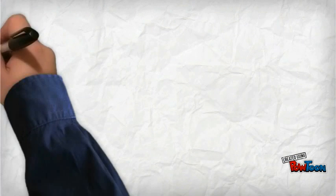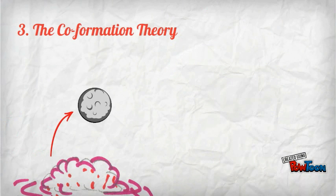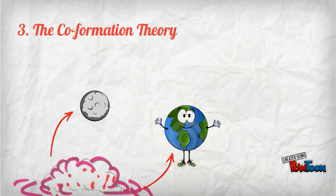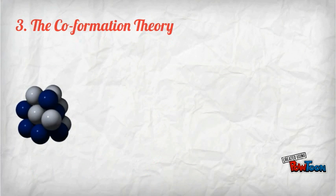The third theory is the Co-formation Theory. It explains the possibility that the moon formed alongside Earth 4.5 billion years ago, coalescing from gas and dust in the same part of our solar system's protoplanetary disk. While this hypothesis can account for the isotopic similarities between Earth and the moon, it falls short in other ways.